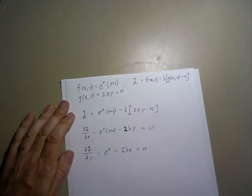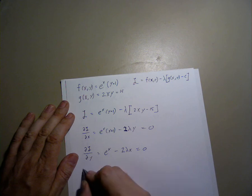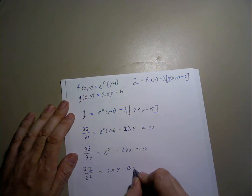Next, to solve this, we can include the constraint. The next partial derivative with respect to lambda gives us the constraint, 2xy minus 15 equals 0.